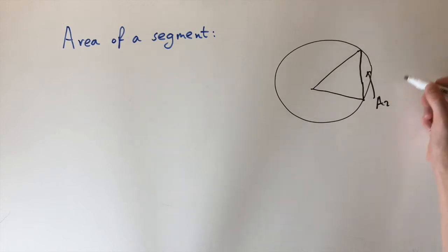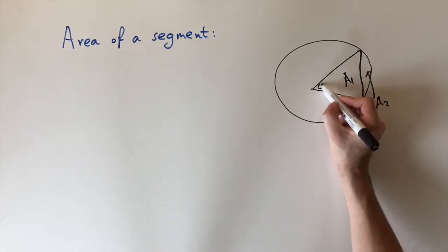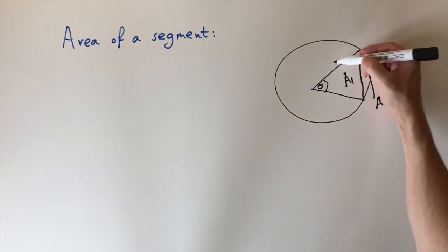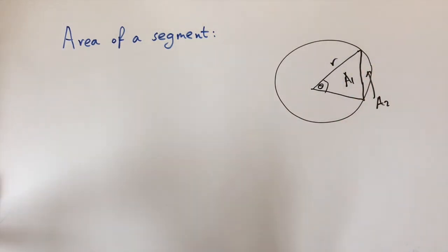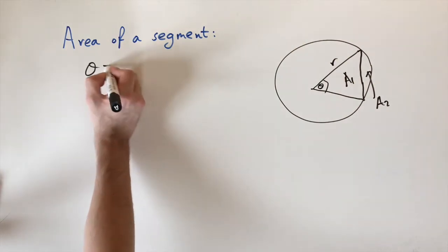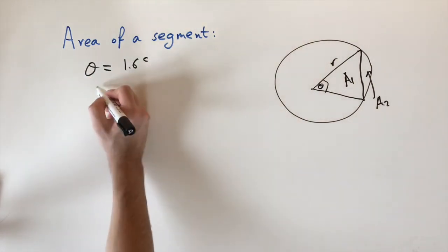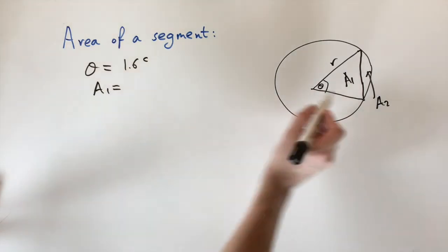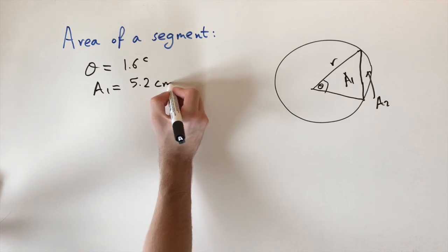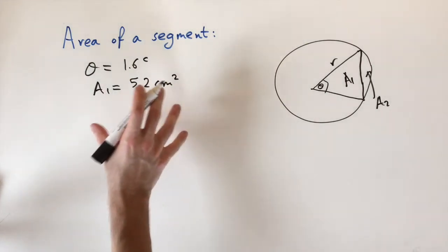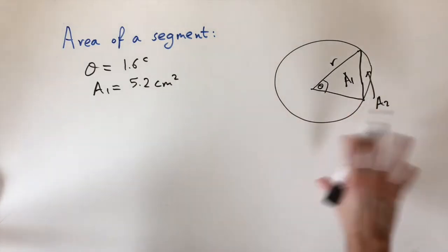I'll call the segment area A2 and the triangle area A1. Writing on some symbols: r, theta, and r. For this question, we're given that the angle is 1.6 radians and the area of the triangle A1 is 5.2 centimeters squared.